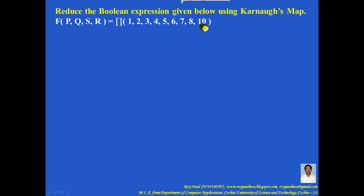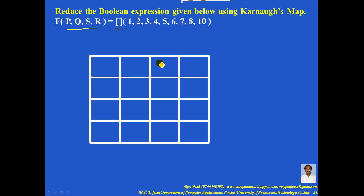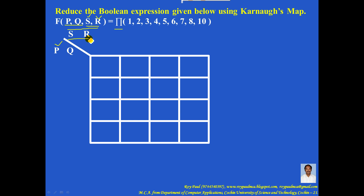Step 1. For a 4-variable boolean expression in the PI format, you can draw the empty KMAP with 4 rows and 4 columns. The first 2 variables must be written here and the next 2 variables must be written here. Remember, it is given as S and R, and in the same order it must be written.